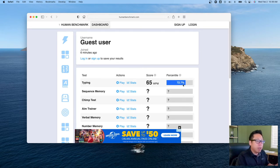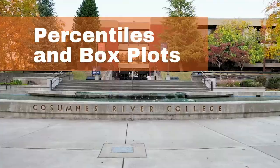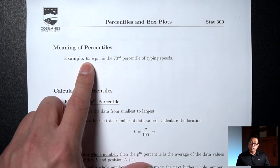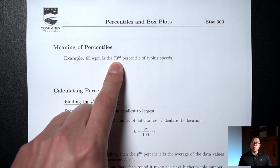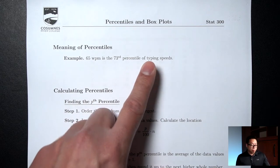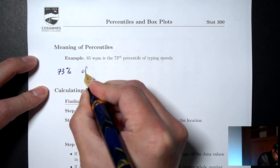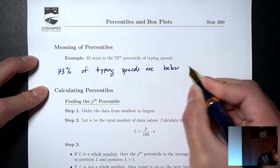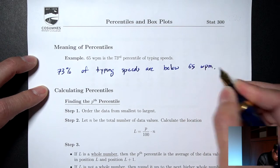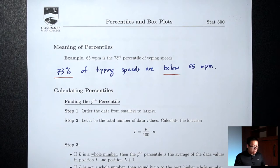Let's call that 73%. So what does a 73rd percentile mean? The website told me that my score of 65 words per minute is the 73rd percentile. Percentiles tell you what percent is below. So 73rd percentile means that 73% of all typing speeds are below 65 words per minute.